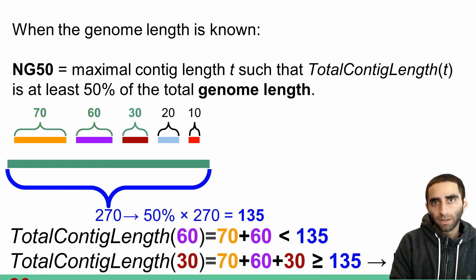Let me now consider the next longest contig, which has length 30. Total contig length of 30 would be 30 plus 60 plus 70, which is greater than or equal to 135.